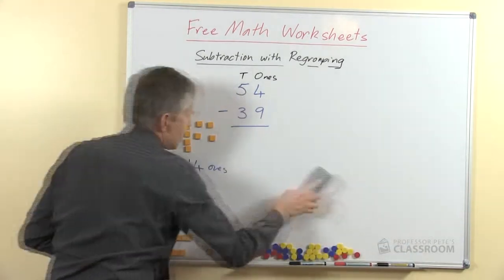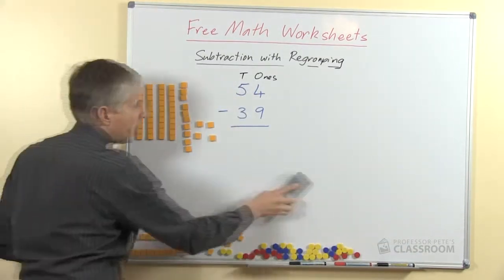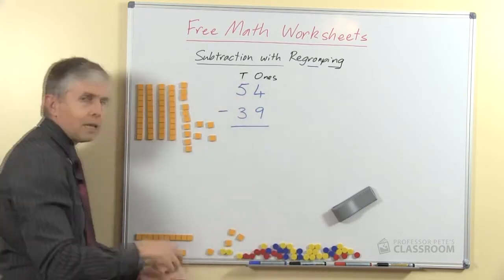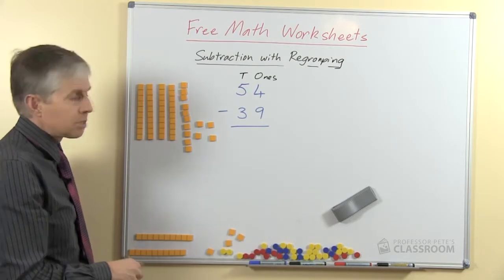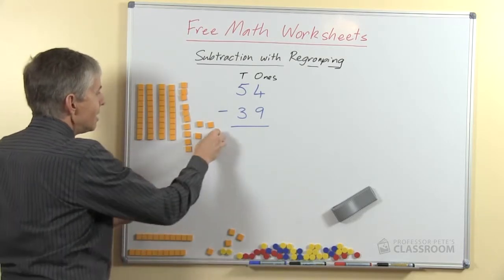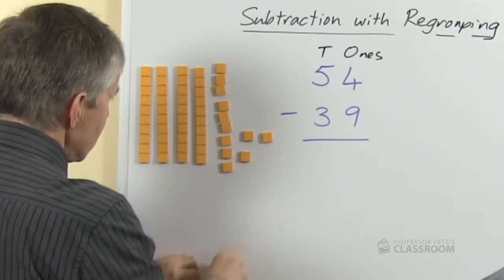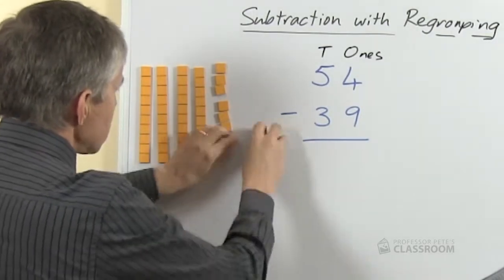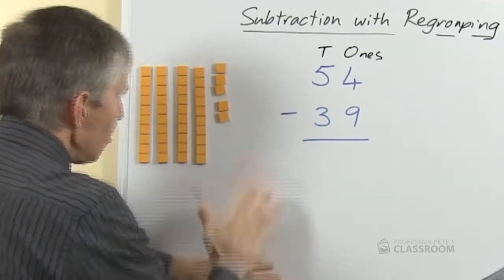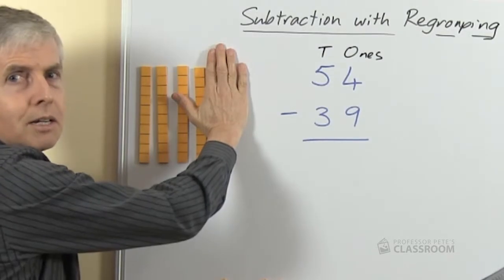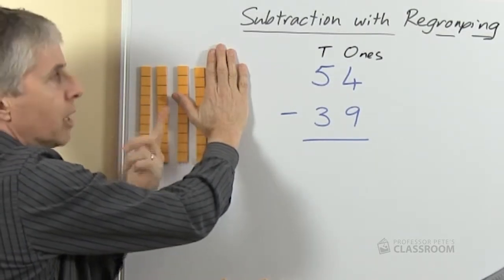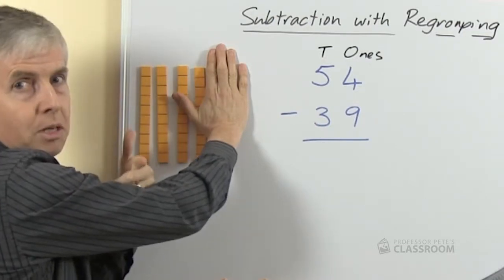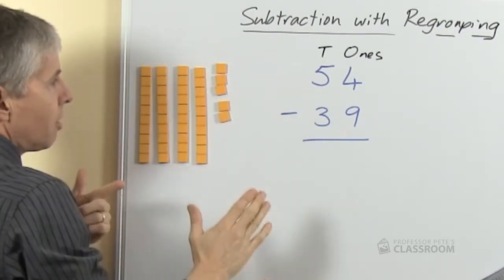Now we can do our take away and I'm sure you can see how easy it is now that we've done that trading or regrouping. And that was the most difficult part of the whole question. So now we're taking away 9, so it doesn't matter which 9 I take away, 2, 4, 6, 8, 9. How many are left? Could you do that without counting? That would be something you could do in your head as a number fact. If we had 14 and we're taking away 9 there will be 5 left.